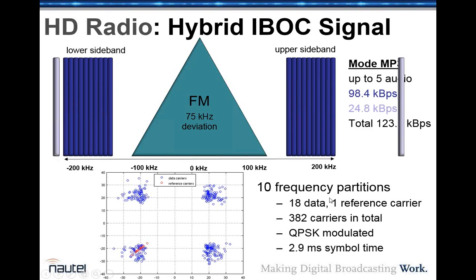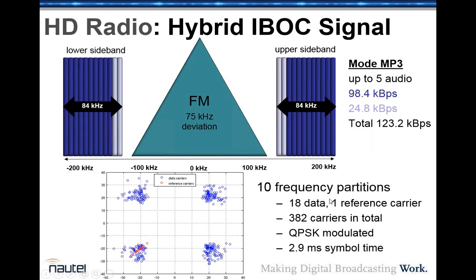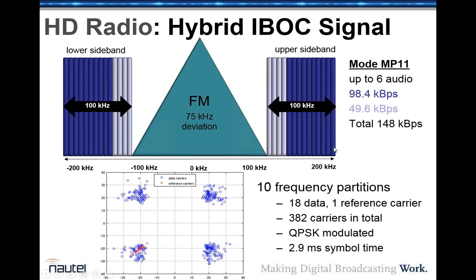We always want more data. Service mode MP3 — not to be confused with MP3 audio — adds two more frequency partitions towards the inside, giving another 24.8 kilobits per second for a total of about 123 kbps, with sidebands increasing to about 84 kilohertz. There's yet another service mode, MP11, which adds another two frequency partitions filling out the entire 100 kilohertz for 148 kbps. However, MP11 is not officially accepted at this point. There would be a trade-off in interaction with the analog — you might have to reduce your deviation slightly, and there could be SCA interference issues.